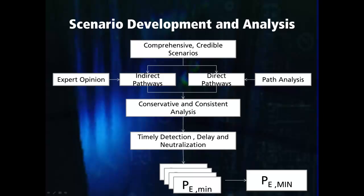In summary, the physical security system must be tested against comprehensive and credible scenarios. For direct pathways, we can use pathways analysis and adversary sequence diagrams. For indirect pathways, we must employ expert opinion. These scenarios must be analyzed in a consistent and conservative way to determine the minimum system effectiveness for each scenario. The worst case of all these scenarios will be the effectiveness rating for the entire system, which is then used to determine if the protection system meets the risk acceptance criteria that was defined in the objectives.